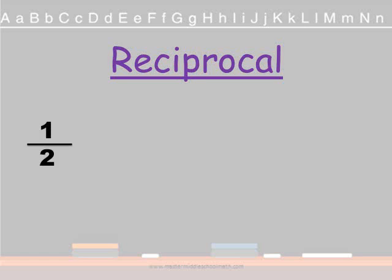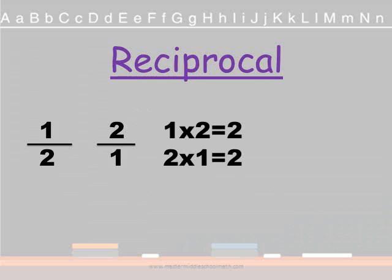So we have the fraction 1 half. The reciprocal of 1 half, it's kind of like just remembering the opposite or flipping it. So it would be 2 over 1. And the definition is that when you multiply these two fractions, you will get a product of 1. So let's look at it. So 1 times 2 is 2, and 2 times 1 is 2. So your new fraction is 2 over 2. Now remember, a fraction is a division problem all by itself. We talked about that before. So you look at this fraction. 2 divided by 2 equals 1. That's the definition of a reciprocal.